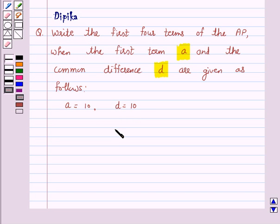Now we know that an arithmetic progression is a list of numbers in which each term is obtained by adding a fixed number to the preceding term except the first term, and the fixed number is called the common difference of the AP. It can be positive, negative, or zero.